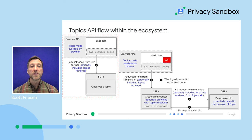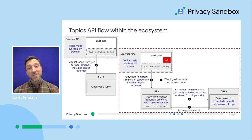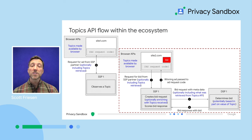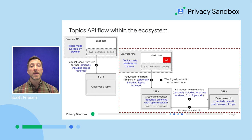Here is what a typical Topics flow looks like in more detail, from a publisher site to DSP and back. An SSP observes and collects topics from a browser through the presence of their ad tags on a publisher site, triggered by an ad request. This enables the SSP to later retrieve topics from a user's browsing history for future bid requests. When that same SSP receives an ad request from the same browser on a different site, it may enrich the request with topics received from recently visited websites. The SSP shares bid requests with participating DSPs, which determine their bid based on the value of that topic. Finally, the SSP scores each bid, identifies the winning bid, and passes the winning ad to the site.